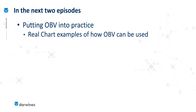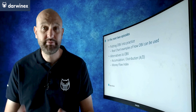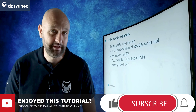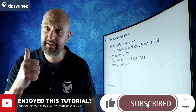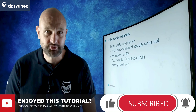Next time I'll be putting this indicator into practice on real charts, and in the episode after that I'll be looking at some alternatives to the OBV indicator — specifically accumulation distribution and the money flow index. Please do remember to tune in for those next episodes, and if you've got value from today then please remember to give me a like. Until next time, trade wise, trade safe.